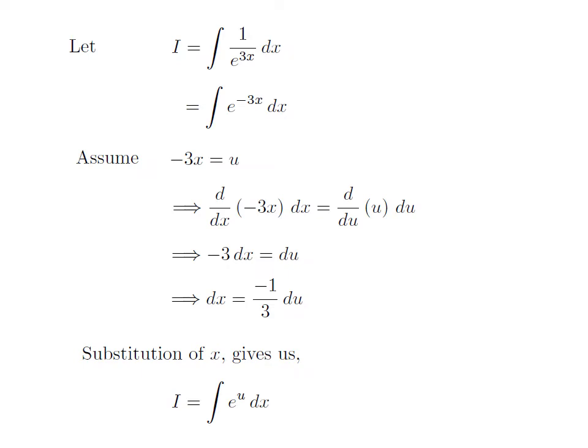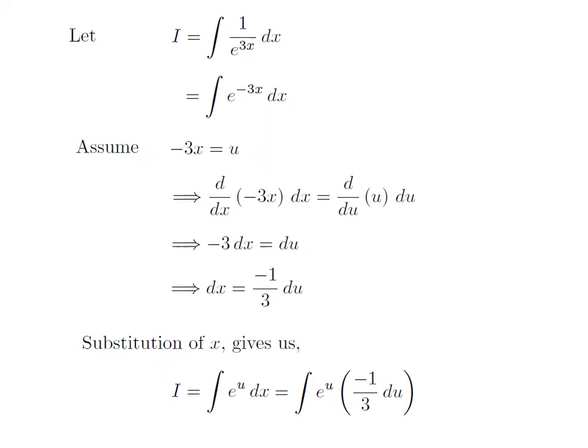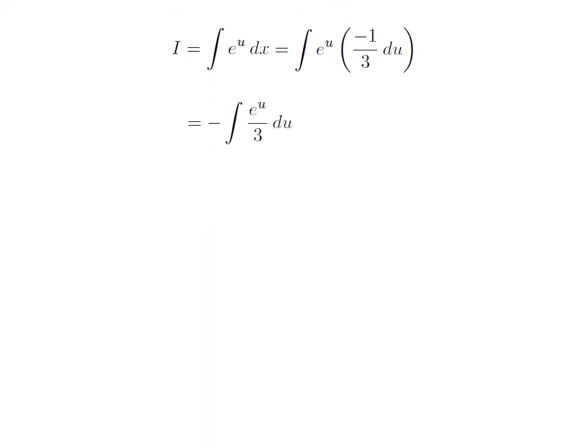I have substituted x in integral i by our assumed value. The integration i has become integration of e to the power u into differential of x. I have substituted differential of x by minus 1 upon 3 into differential of u. So i is equal to integration of e to the power u into minus 1 upon 3 into differential of u. Multiplying minus 1 upon 3 with e to the power u, we get i is equal to minus integration of e to the power u divided by 3 with respect to u.